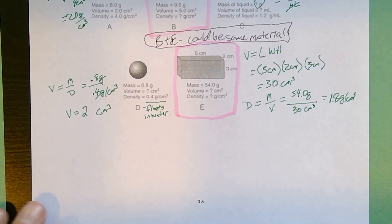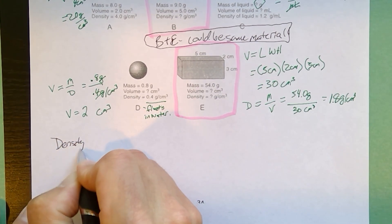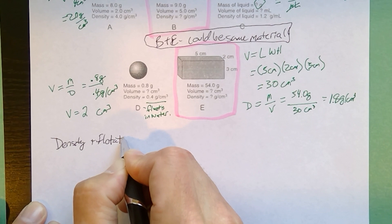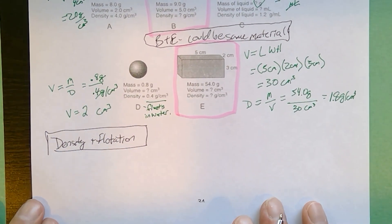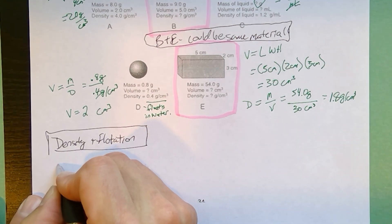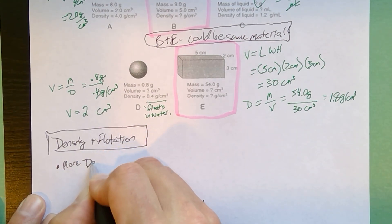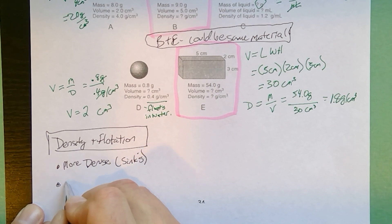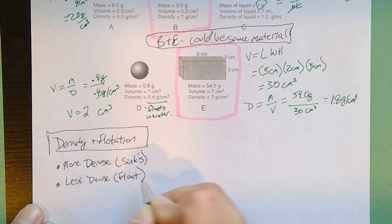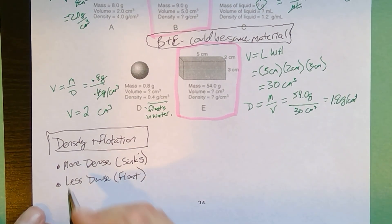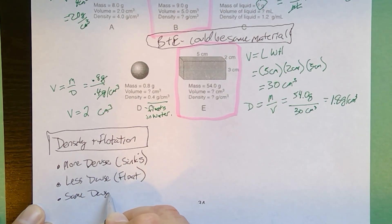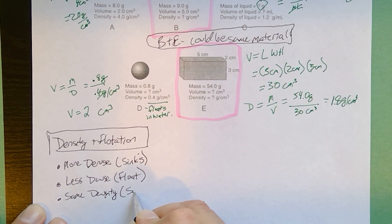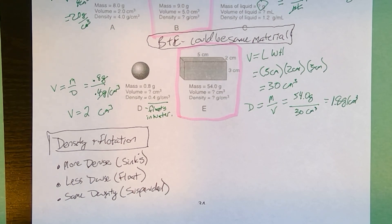A couple other things we want to discuss quickly. Density and flotation. If you have a fluid, whether a material floats or sinks depends on the density. If it's going to be more dense, if your object has a higher density, it sinks within the fluid. If it's less dense, it's going to float. And the lower the density, the higher it's going to float. Now, if it has the same density, the same density is going to be suspended. It will just stay partially submerged within the fluid.